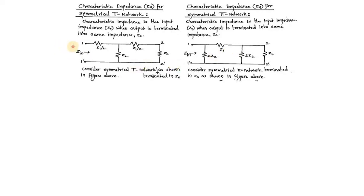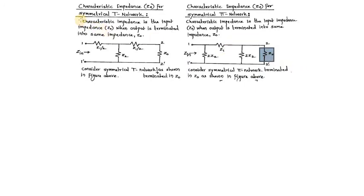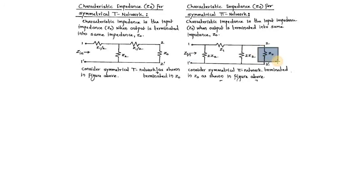We say that Zin is the input impedance for this symmetrical T network, and it is terminated at Z0. Similarly, here is a pi network which is terminated at port 2 by an impedance of value Z0. Characteristic impedance means that Zin must equal Z0 — this Z0 must equal Zin for this value to be called the characteristic impedance of the pi network, and similarly for the T network.